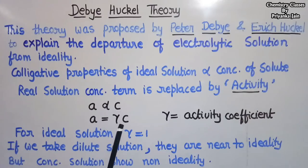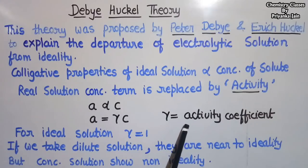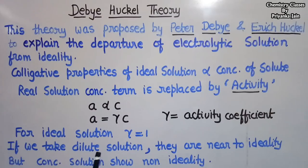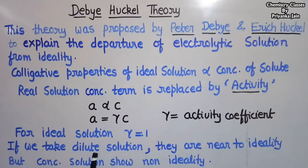Activity A is directly proportional to the concentration, or we can say A is equal to gamma times C, where gamma is a constant called the activity coefficient. In the case of ideal solutions, the value of this activity coefficient is equal to 1. For dilute real solutions, behavior is near ideal, but when concentration increases, they show departure from ideality.